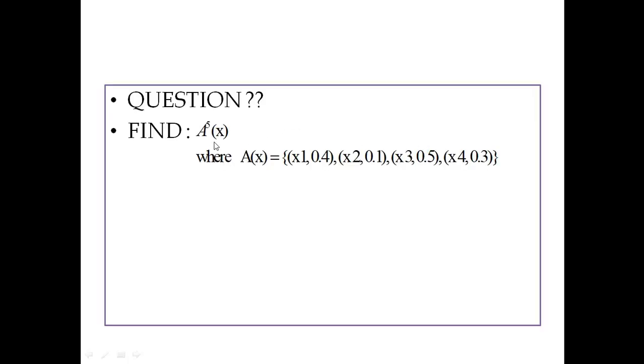For today, try to solve this question: A(x) is given as x1 over 0.4, x2 over 0.1, x3 over 0.5, x4 over 0.3. Now find out A to the power 5(x). I hope you can do that, then post your answer by comment.